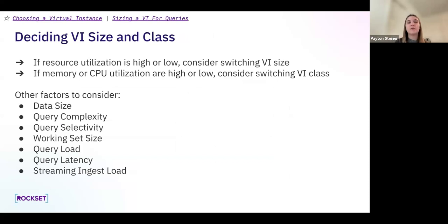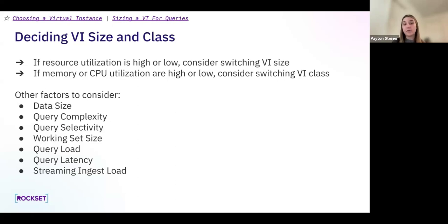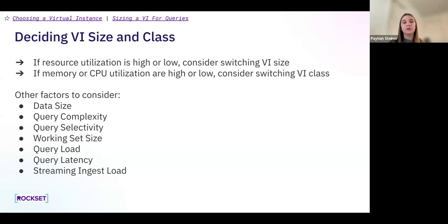Now that we've gone over types, sizes, and classes, I want to briefly touch on deciding which VI size and class is right for you. I've linked great resources at the top of this slide with more specific use case examples. A couple good general rules of thumb: if your resource utilization is high or low, consider switching your VI size; if your memory or CPU utilization are high or low, consider switching VI class. Other factors to consider include data size, query complexity, query selectivity, working set size, query load, query latency, and streaming ingest load.